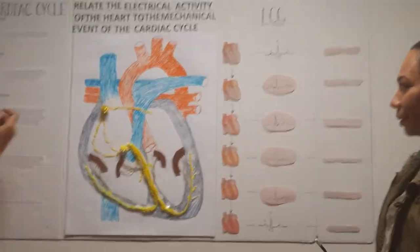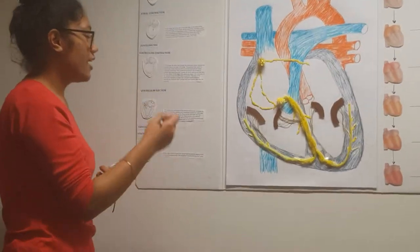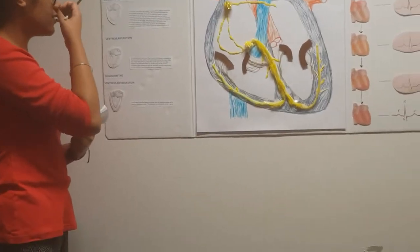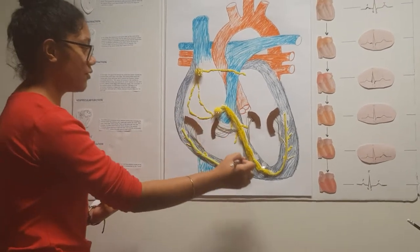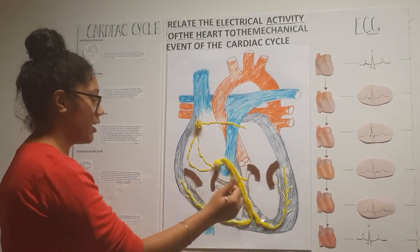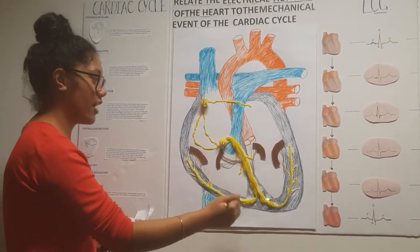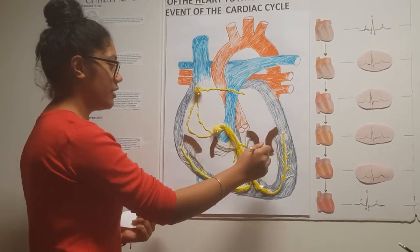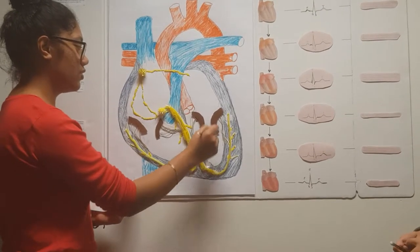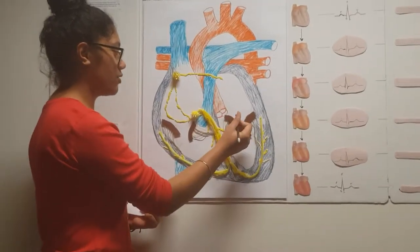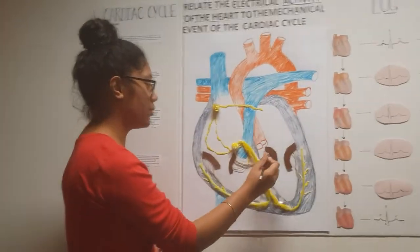The next step of the cardiac cycle is the isovolumetric ventricular contraction. At this stage, the signal sent by the conduction system reaches the Purkinje fibers at the apex of the heart. The Purkinje causes the ventricle to contract, increasing the pressure inside the ventricle, causing blood to flow back up to the atrium and the inlet valve to close. In this stage, both valves are closed.